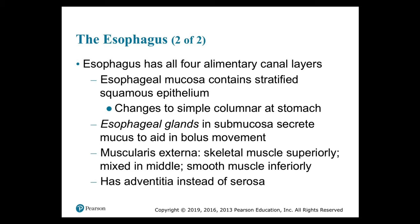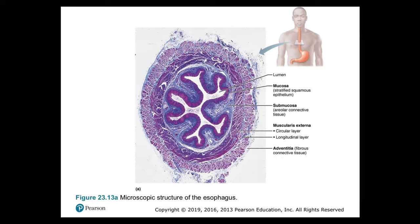Over the one to two centimeters between the diaphragm and the stomach, the esophagus is retroperitoneal with peritoneum covering the anterior and left lateral surfaces. The microscopic structure of the esophagus, starting from the lumen: the mucosa layer is stratified squamous epithelium; the submucosa is areolar connective tissue; the muscularis externa consists of circular and longitudinal muscle layers; and the adventitia is a fibrous connective tissue layer on the outside.